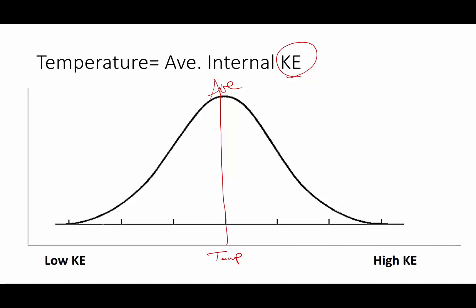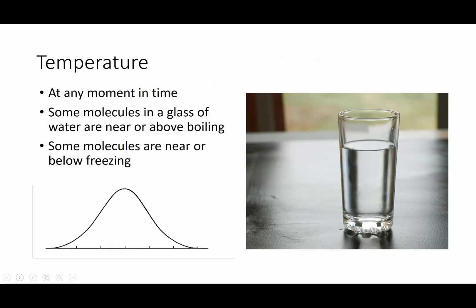Within any sample of water, Kool-Aid, hot metal, or whatever you're talking about, you're going to have some molecules with a very high kinetic energy and some molecules with a very low kinetic energy. So if we're talking about a glass of water, at any moment in time, some of the molecules happen to be very close to boiling — very hot — and some of those molecules happen to be very, very cold.